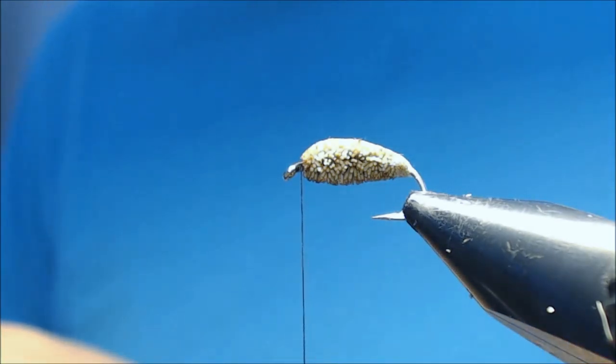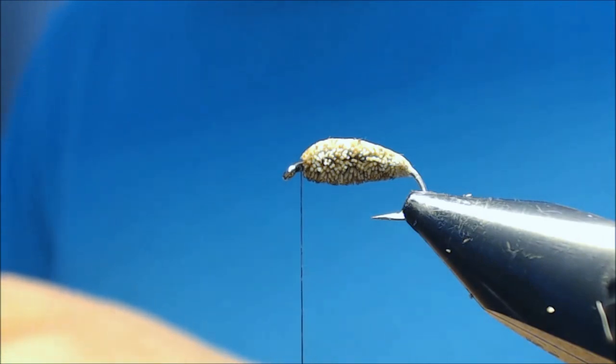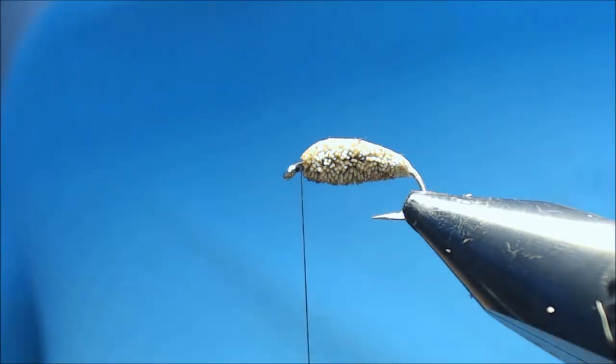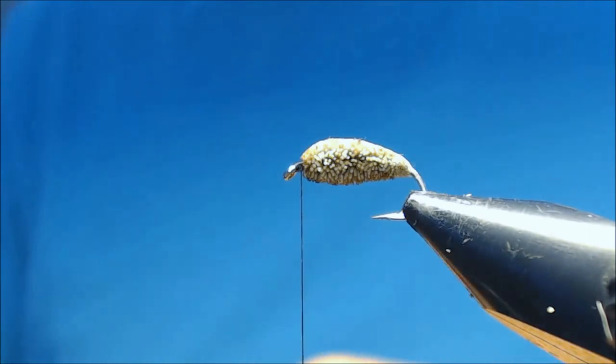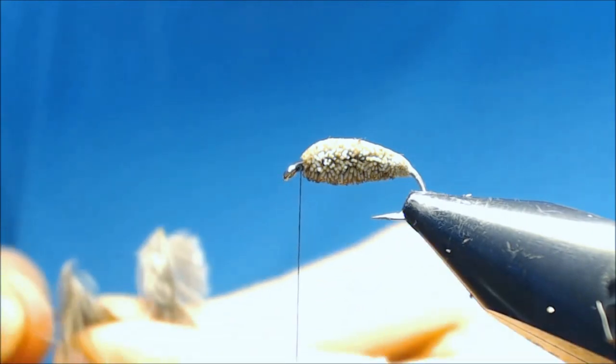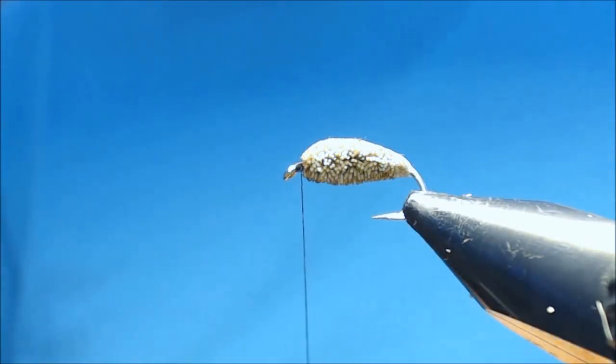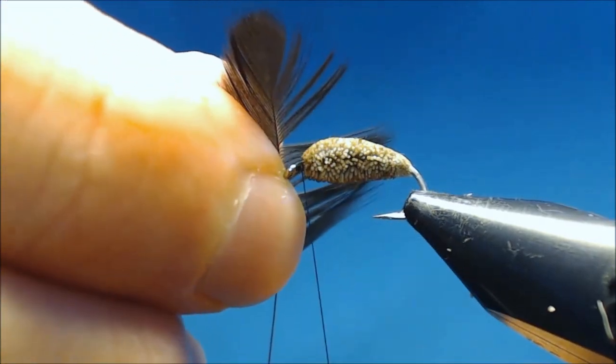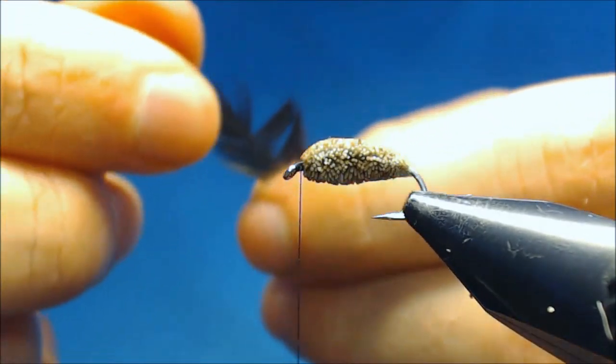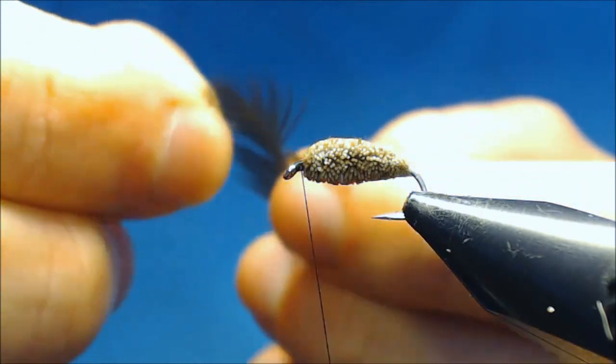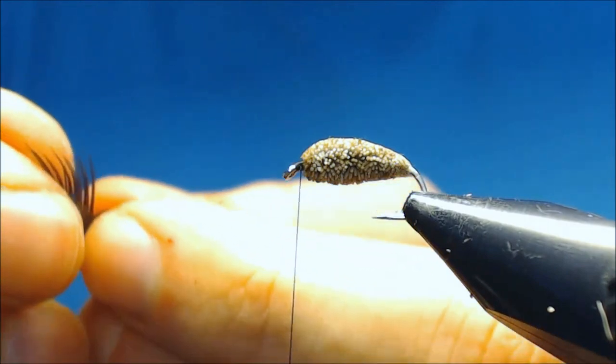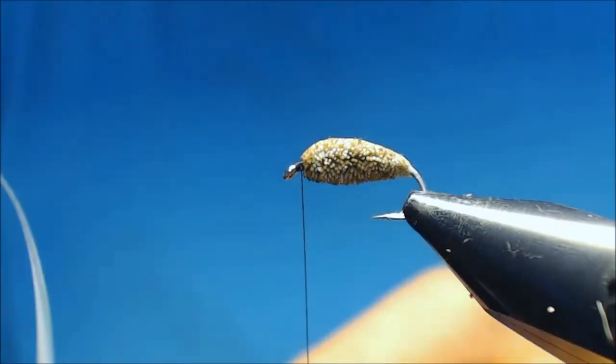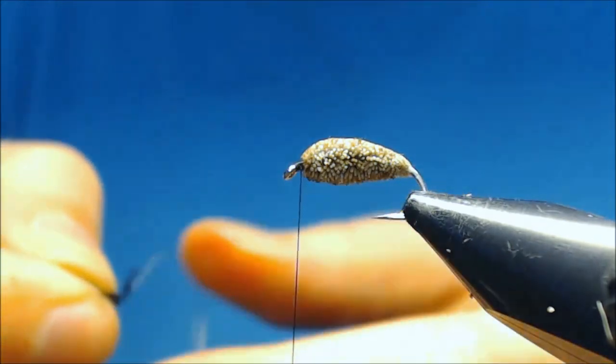But in this case I'll use a hen neck. And I'll just take one feather off. Take off all the fluffy stuff. And then measure and see which fibers you need. And then pull off all the unnecessary stuff. Then pull down all the unnecessary fibers.